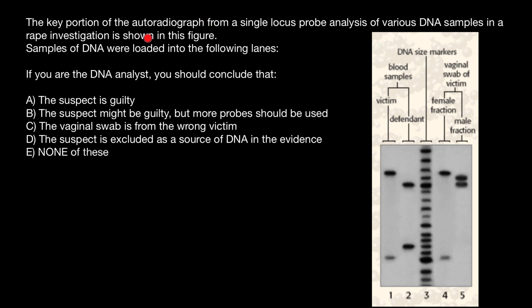First of all, what is the autoradiograph? It is a technique used when we have very little genetic material. We add radioactive labels to this genetic material and then run a gel. We wouldn't be able to visually see bands because there is so little genetic material. But when we apply a film which is sensitive to this radioactivity, we expose that film and are able to see these bands — their position on that film. So basically we analyze not the gel itself, but the film that has been exposed to this DNA with radioactive labels.